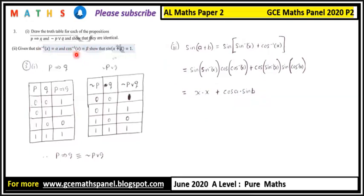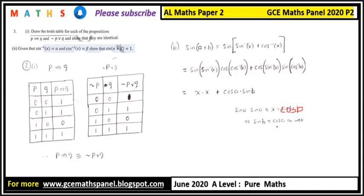We find that sine alpha equals x equals cosine alpha — wait, more precisely, since sin(a) = x and cos(b) = x, it follows that sin(a) = cos(b). And equally, sine b should also equal cosine a. If sine a equals cosine b, then sine b must equal cosine a.